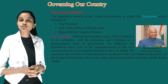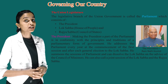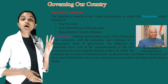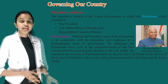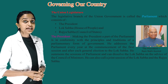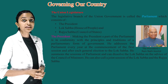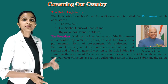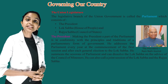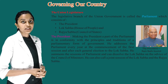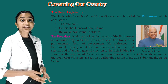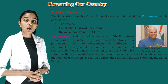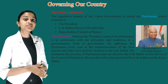The Union Legislature: the legislative branch of the Union Government is called the Parliament, which consists of the President, the Lok Sabha — House of People — and the Rajya Sabha — Council of States. Making the President a part of the Parliament is in conformity with the principles and traditions of a parliamentary form of government. He addresses the Parliament every year at the commencement of the first session and after each general election to the Lok Sabha. He summons the sessions of Parliament, can dissolve the Lok Sabha on the advice of the Council of Ministers, and can also call a joint session of the Lok Sabha and the Rajya Sabha.